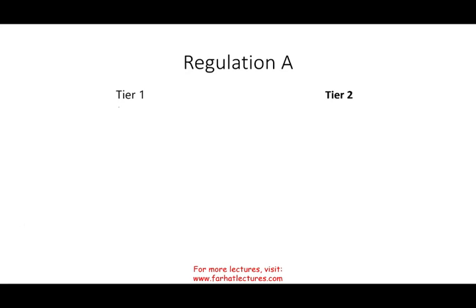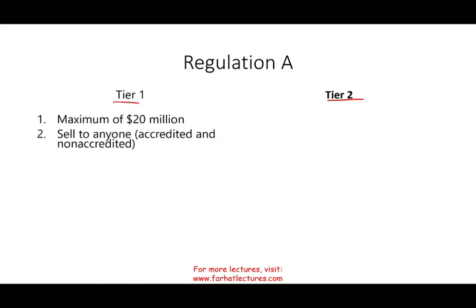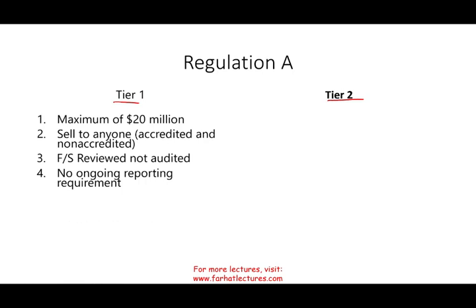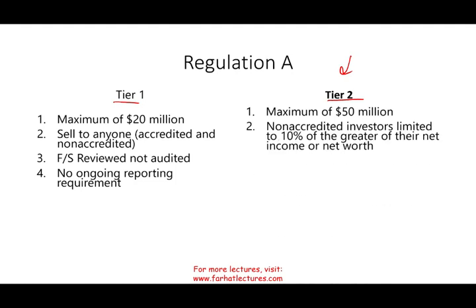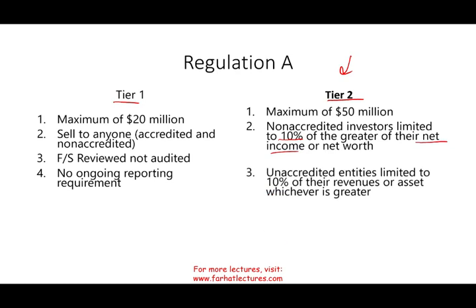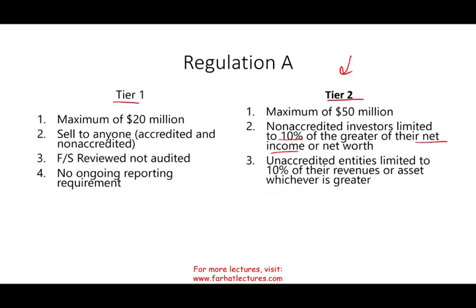Under Regulation A, there are two tiers depending on the amount you're raising. Under Tier 1, you can raise up to $20 million. You can sell to anyone — accredited and non-accredited investors — and all you need is reviewed financial statements, not audited, with no ongoing reporting requirements for quarterly, semi-annual, or annual filings. Under Tier 2, if you want to raise more than $20 million but less than $50 million, you go under Tier 2. For non-accredited investors, they are limited to 10% of the greater of their net income or net worth. For unaccredited entities like companies, they are limited to 10% of their revenues or assets, whichever is greater.